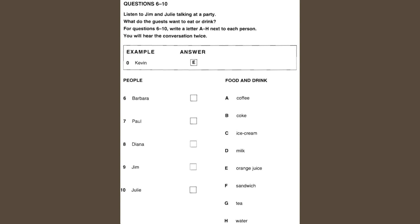Could you make a sandwich for Barbara? What does she want in it? She asked for cheese. And Paul wants an ice cream. Fine, I'll make the sandwich and get the ice cream for him. What does Diana want? She isn't hungry, she just wants a glass of milk.